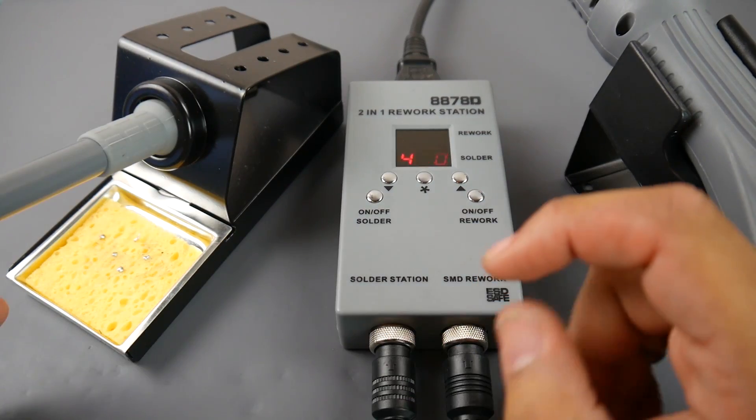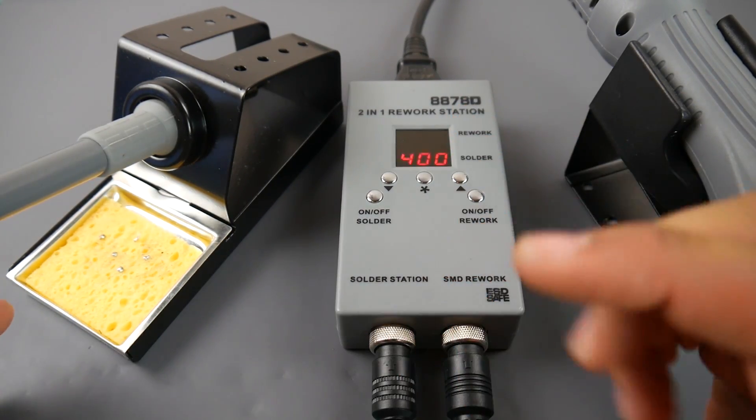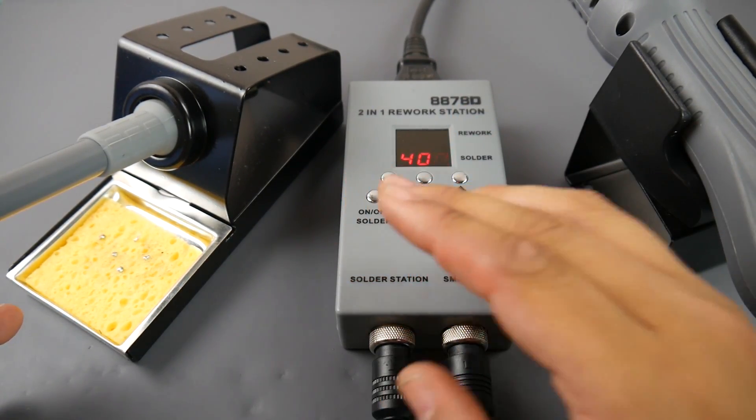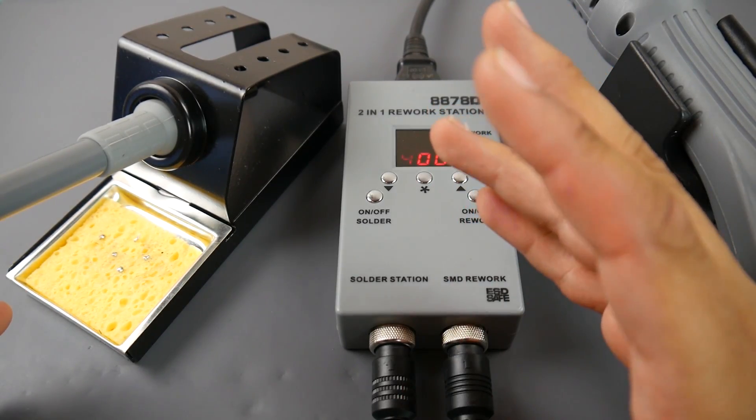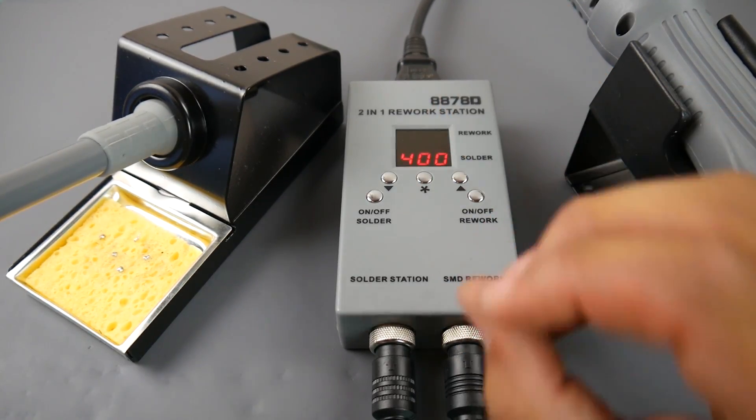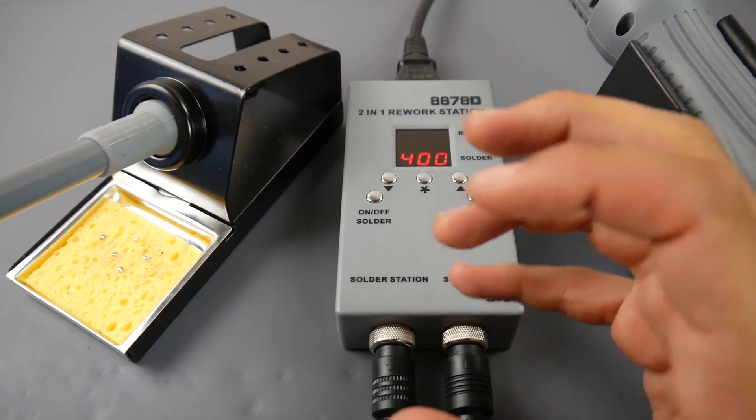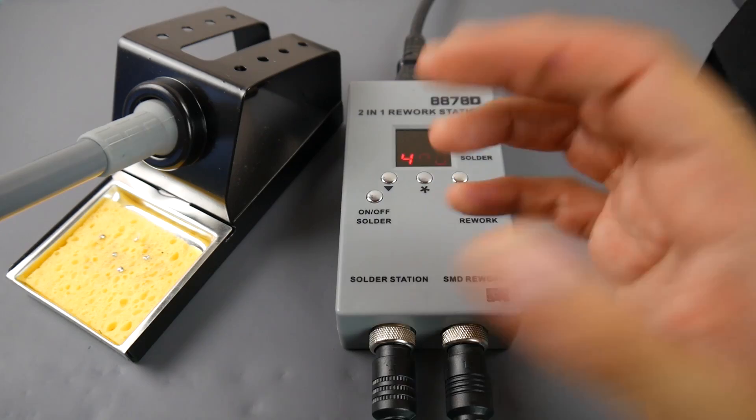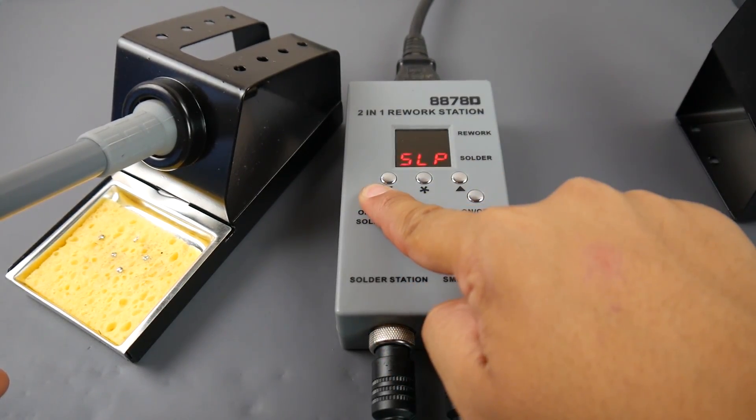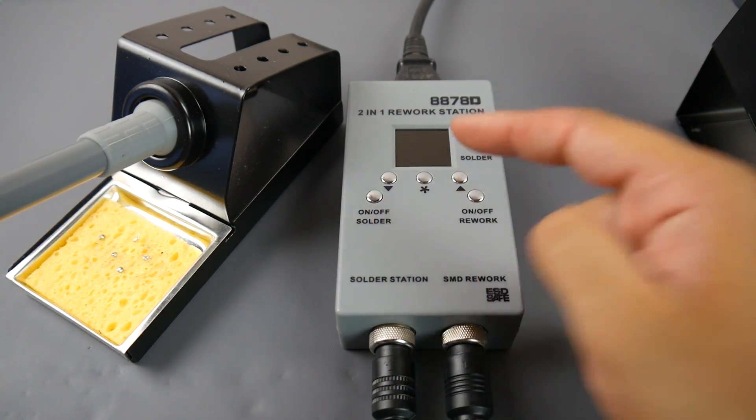A couple things I've noticed with working with this is that it does not allow the temperature to drop. It does sense that the temperature is dropping and pushes more current in and keeps that temperature very stable, which is really good especially for big joints. How would we turn this off? Just hold this and it'll turn off. There's even sleep mode if you wanted.